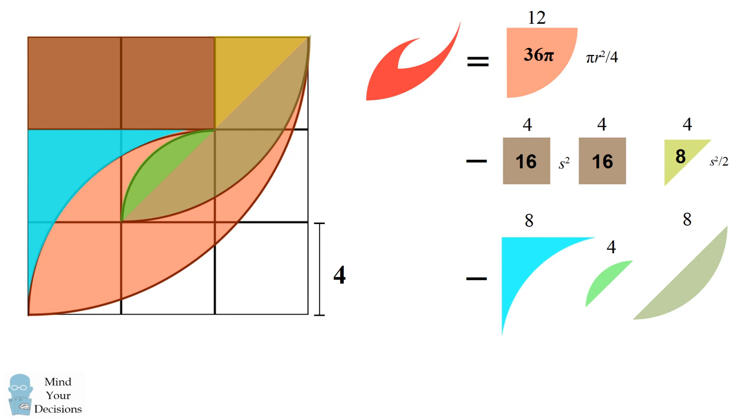Now this blue region is the area between a square and one-quarter of a circle. This will have an area that's equal to r² minus π r² divided by 4. Here r equals 8. So this blue region has an area of 64 minus 16π.